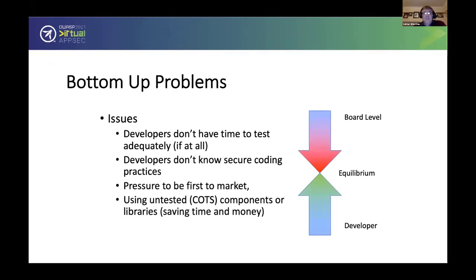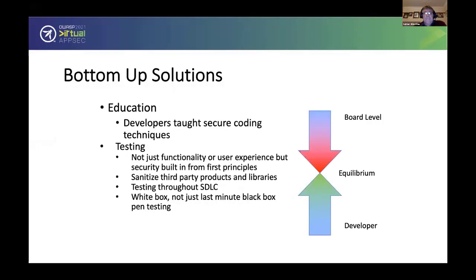We can look at this from a bottom-up problem point of view. Developers don't have time to test adequately if at all. Developers don't know secure coding practices. There's always pressure to be first to market, and using untested customized off-the-shelf components or libraries tends to save time and money. The bottom-up solution is about education — developers taught secure coding techniques, whether during university, revision programs, or as part of ongoing education for development teams. It could also be about testing: not just functionality or user experience, but security built in from first principles.